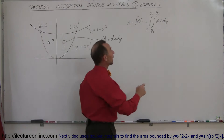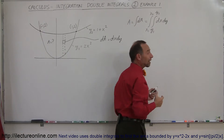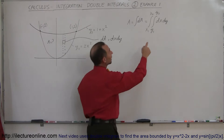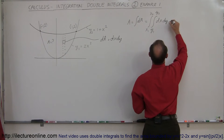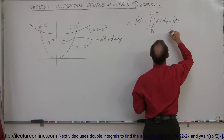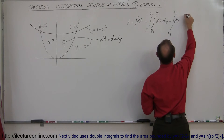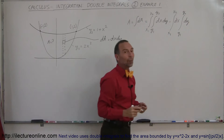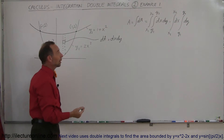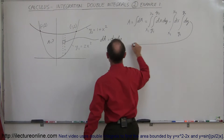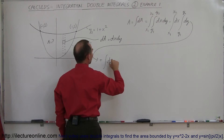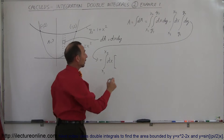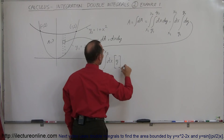One step at a time, we're going to integrate in the y direction first, which means dx acts like a constant. dx doesn't change when we integrate in the y direction, so we can take it outside the integral sign. We can write this as the integral of dx from x1 to x2 times the integral of dy from y1 to y2. When we integrate dy, we simply get y, so this becomes the integral from x1 to x2 of dx times y, evaluated from y1 to y2.